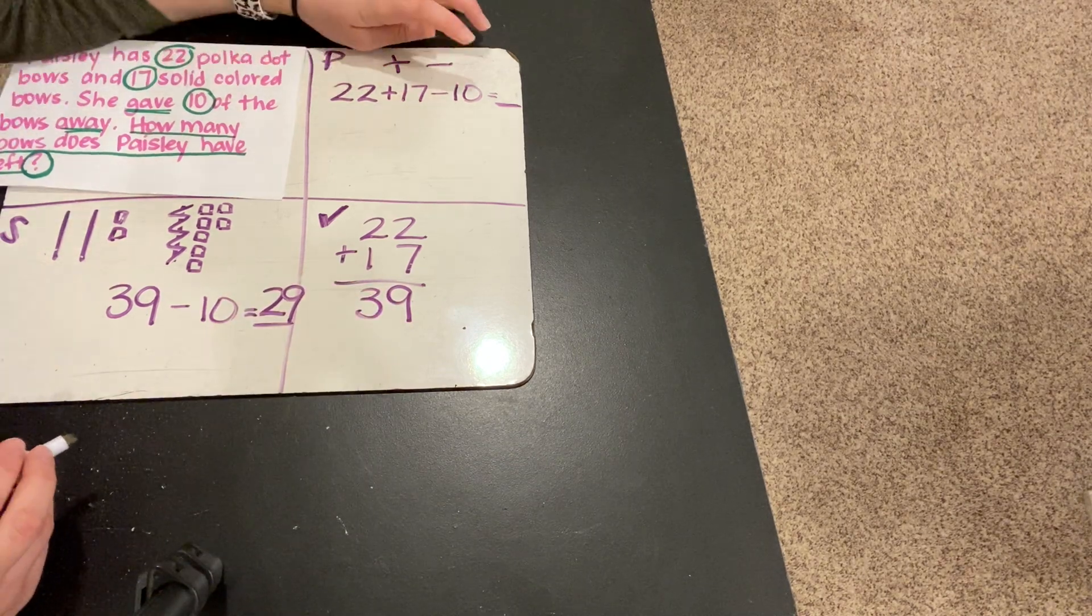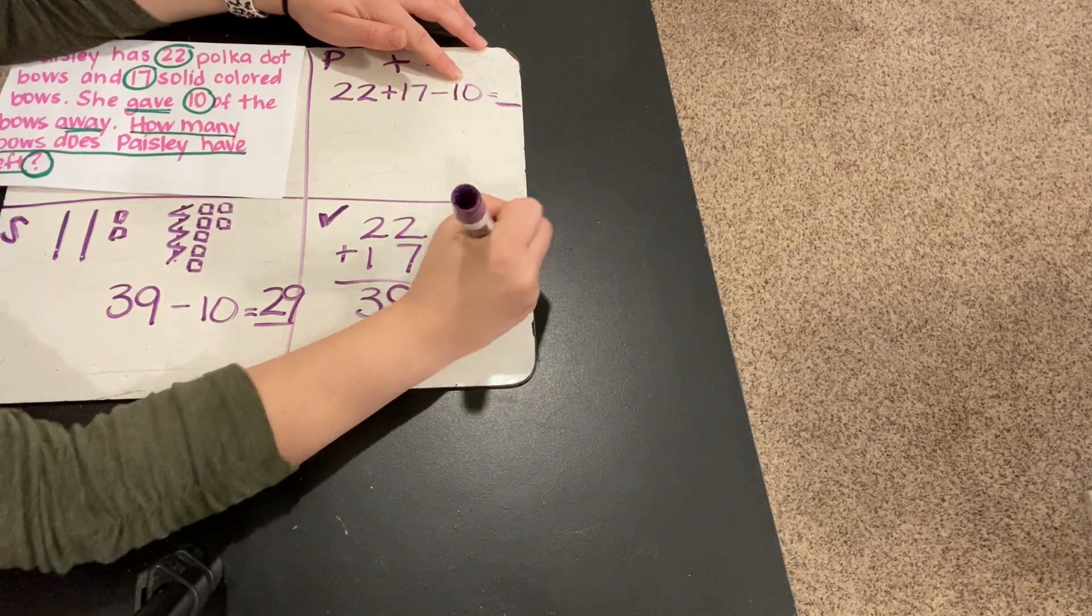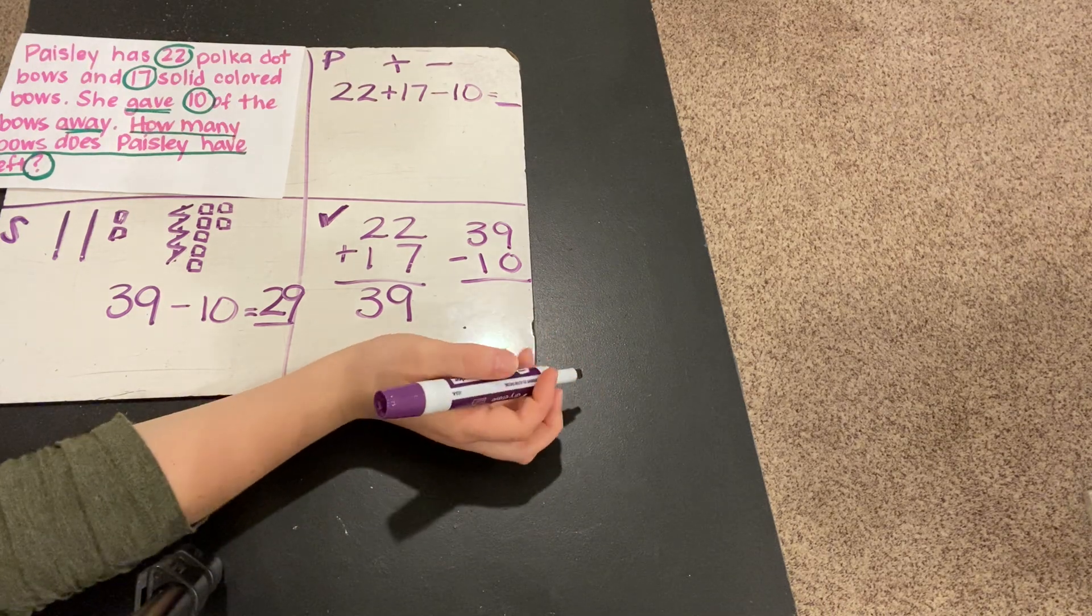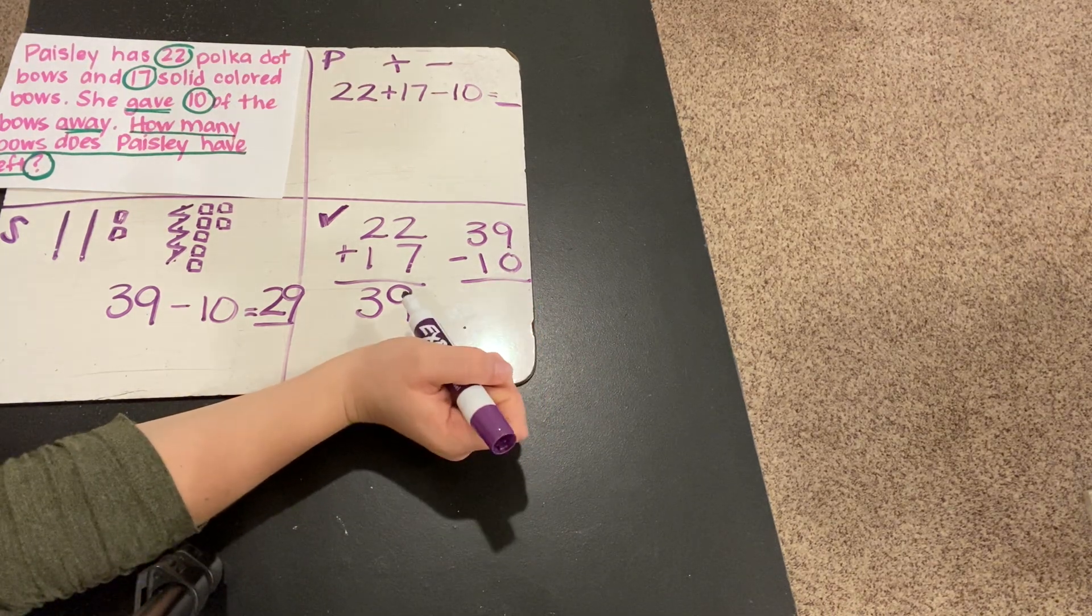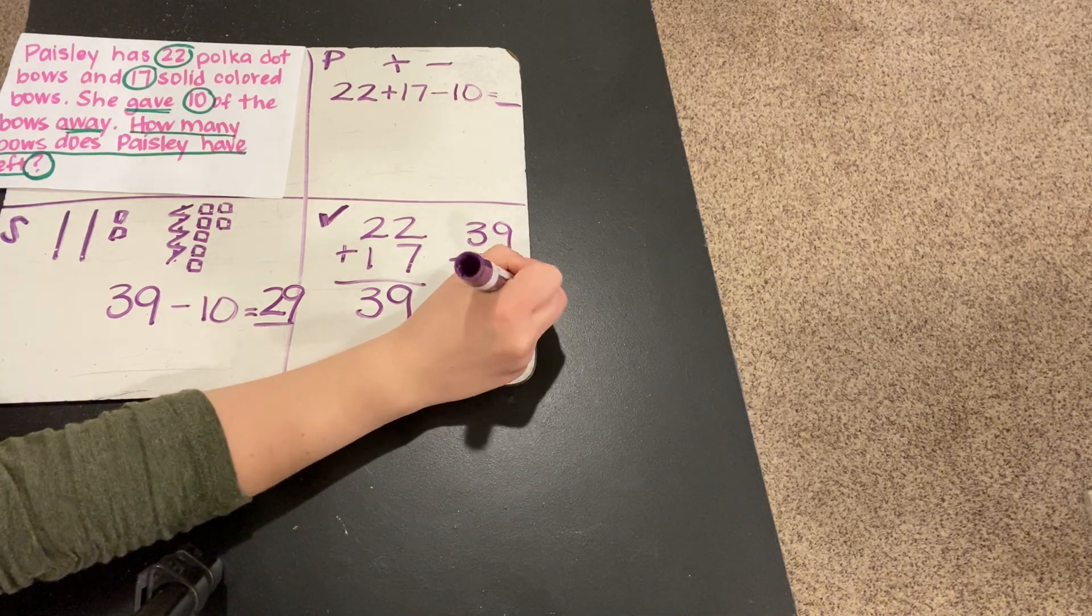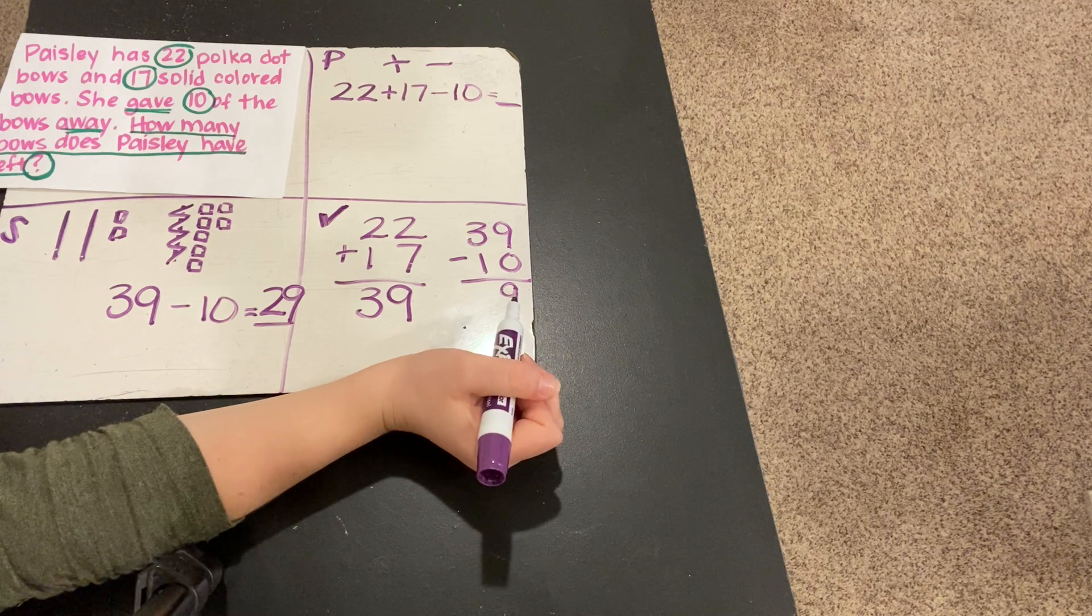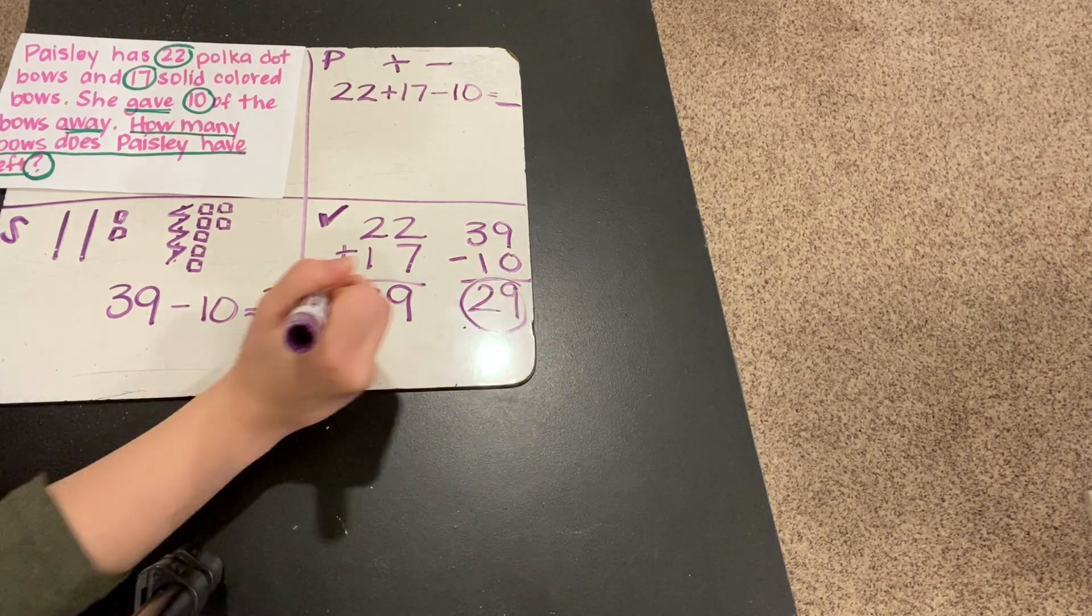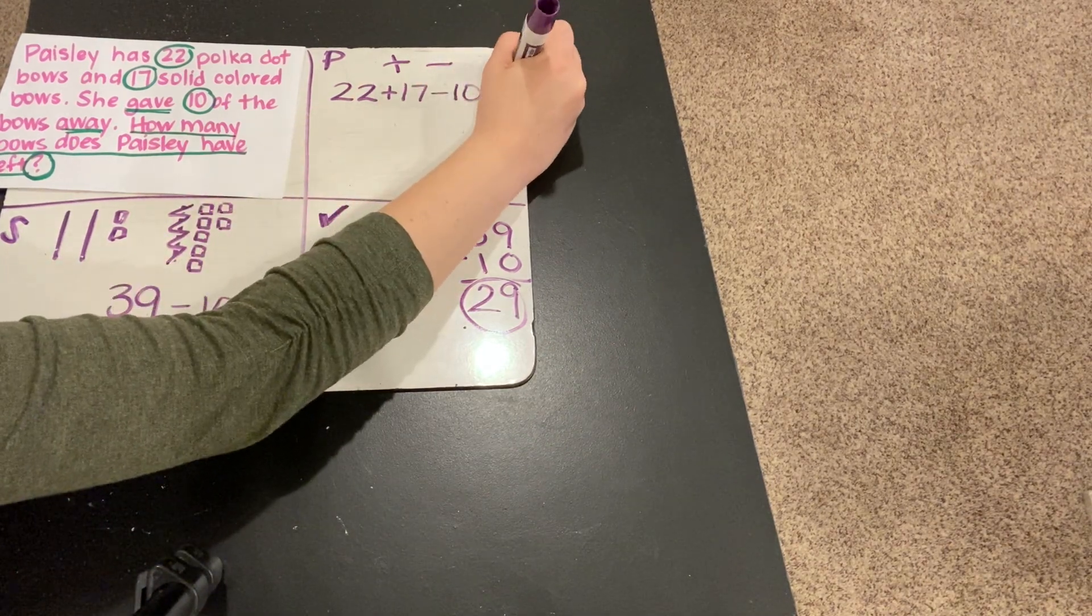Then, don't forget, we're not done yet because we still have to take away the 10. So, 39 minus 10. What is 9 minus 0? 9. And then, 3 minus 1? 2.